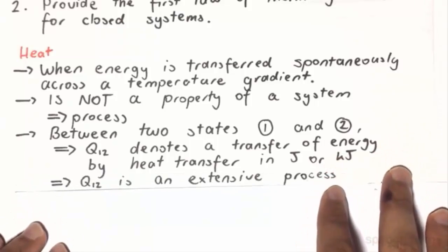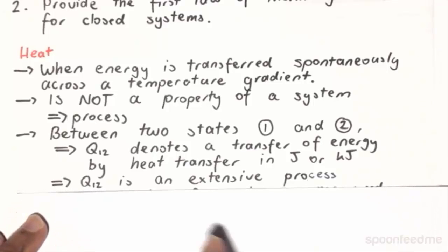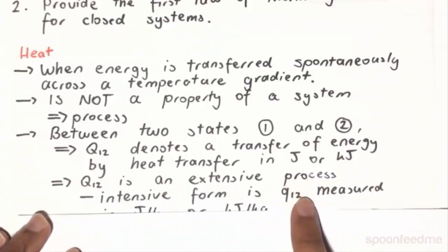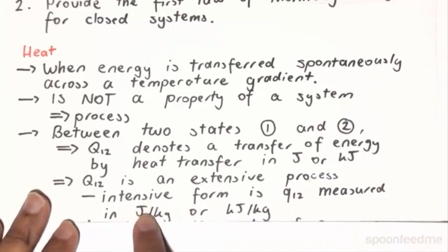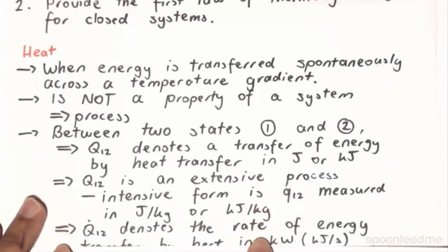So just like we have extensive and intensive properties, we also have extensive and intensive processes. And Q12, by definition, is an extensive process. So its intensive form is going to be the lower case q12, and that's going to be measured in joules per kilogram, or more commonly, it's going to be in kilojoules per kilogram.